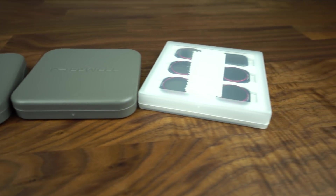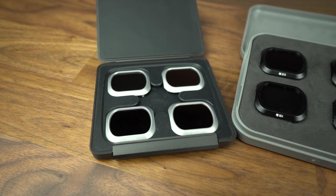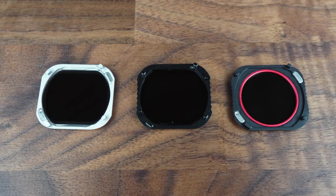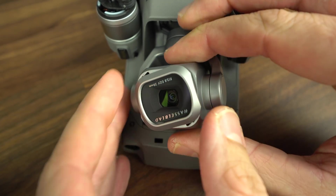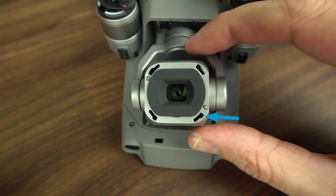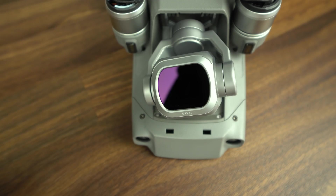So which ND filter set should you purchase for your Mavic 2 Pro? Consider three categories: fit and finish, image quality, and price. On fit and finish: the official DJI filters have metal plate inlays on opposite sides, which are important for the filter to fit correctly on the drone. The Freewell filters also have these inlays. There are actually two variants of the filter slots on production Mavic 2 Pros — but according to Freewell, all currently available filters feature these metal inlays, so you don't have to worry.